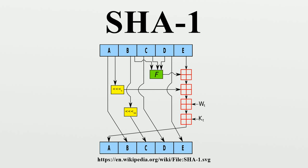Regarding SHA-0: at Crypto 98, two French researchers, Florent Chabaud and Antoine Joux, presented an attack on SHA-0. Collisions can be found with complexity 2^61, fewer than the 2^80 for an ideal hash function of the same size. In 2004, Biham and Chen found near-collisions for SHA-0 — two messages that hashed to nearly the same value, with 142 out of 160 bits equal. They also found full collisions of SHA-0 reduced to 62 out of its 80 rounds. Subsequently, on 12 August 2004, a collision for the full SHA-0 algorithm was announced by Joux, Carribault, Lemuet and Jalby, using a generalization of the Chabaud and Joux attack.